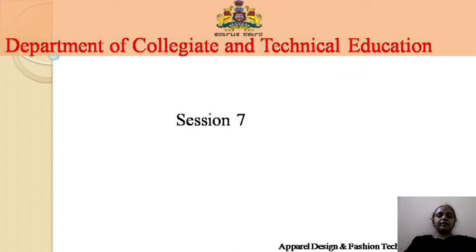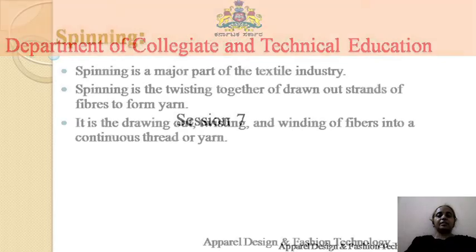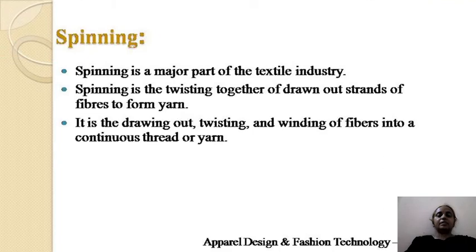Today's session is the seventh session. We have already discussed the definition of yarn, introduction of yarn, types of yarns, and the detailed study of simple yarns and ply simple yarns — under simple yarns you studied four types — and novelty yarns, under which you studied seven types. Next, spinning: in yesterday's session we discussed what is spinning, types of spinning, dry spinning, ring spinning, mule spinning. Today we are discussing wet spinning and dry spinning.